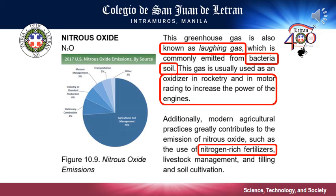Next, nitrous oxide. Nitrous oxide is another greenhouse gas released during industrial and agricultural activities. Nitrous oxide is released in large quantities due to the use of nitrogen fertilizer on crops. It is not released in as large quantities by humans as carbon dioxide, but nitrous oxide absorbs much more energy than carbon dioxide. Therefore, it is required to curb the emission of nitrous oxide as well. This greenhouse gas is also known as laughing gas, commonly emitted from bacteria in soil. This gas is also used as an oxidizer in rocketry and in motor racing to increase the power of engines.